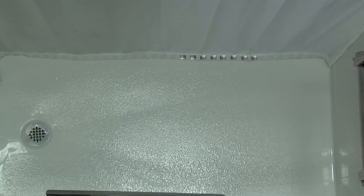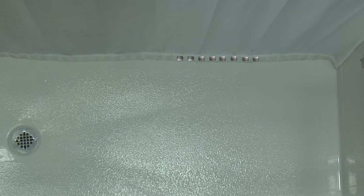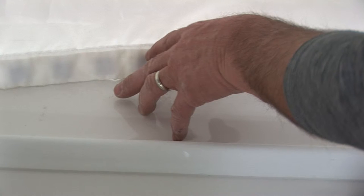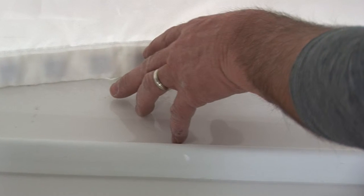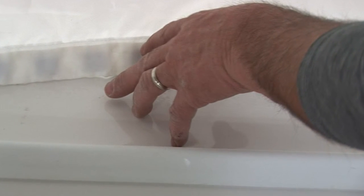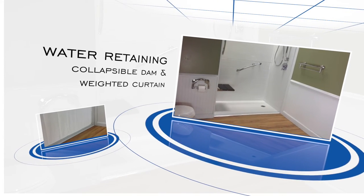Weighted curtains are a necessity for water control success in barrier-free showers. To properly install a weighted curtain, the bottom seam must make contact with the shower floor. Curtain and dam should look as shown when complete.